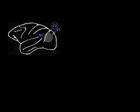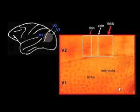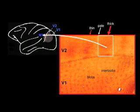V2 is known to be composed of three interleaved functional stripe types. Seen here in a tissue stain for an enzyme called cytochrome oxidase, you can see a thin stripe, a pale stripe, and a thick stripe.